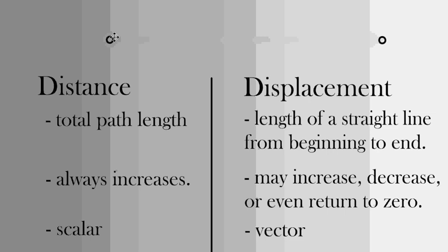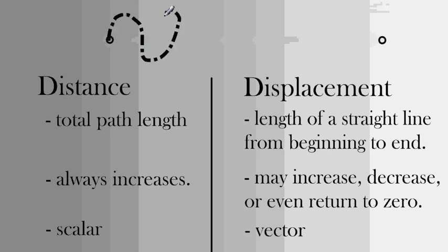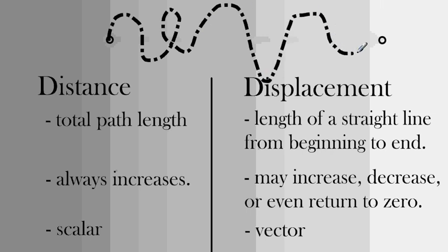Now, if I have this as a starting point up above here, and I wanted to draw a line showing the distance, it could be any path that I'd imagine. And the total length of this path would be the value for the distance. However, the displacement would just be this blue arrow starting at the beginning point and ending at the end point.